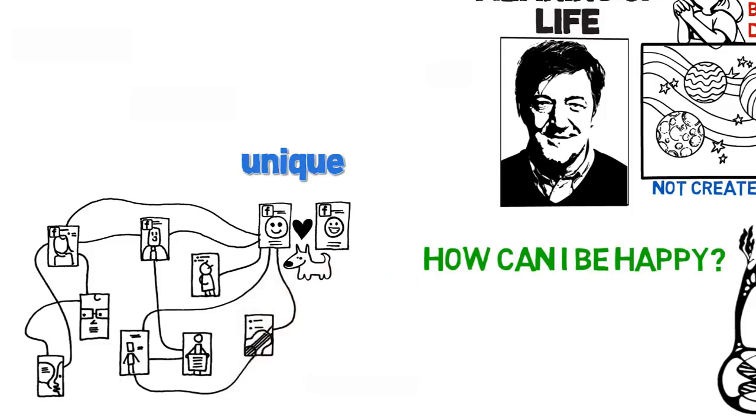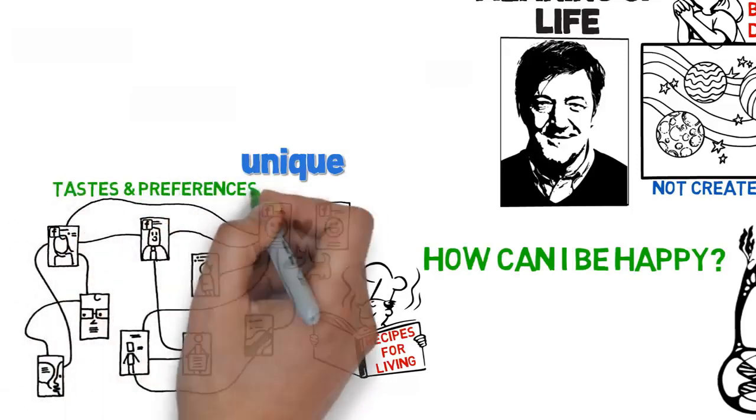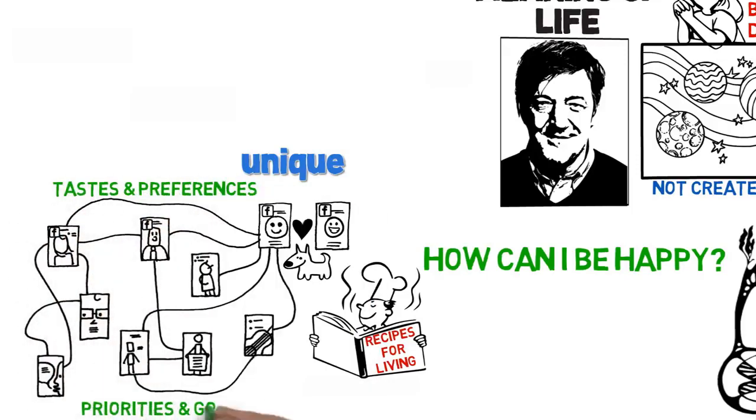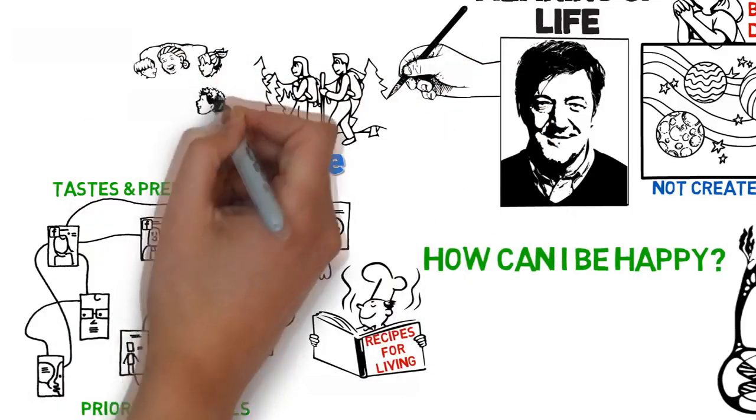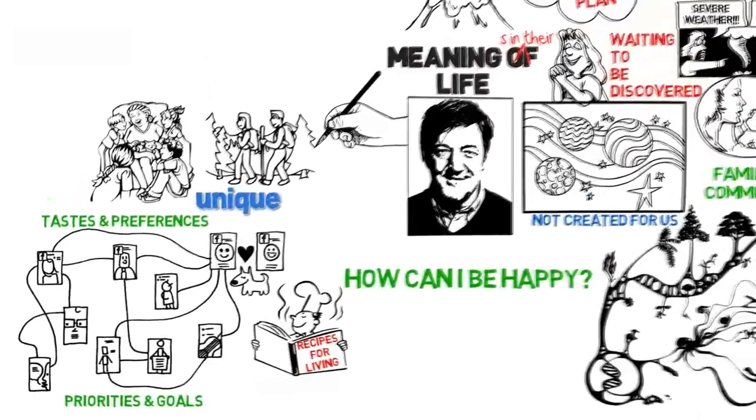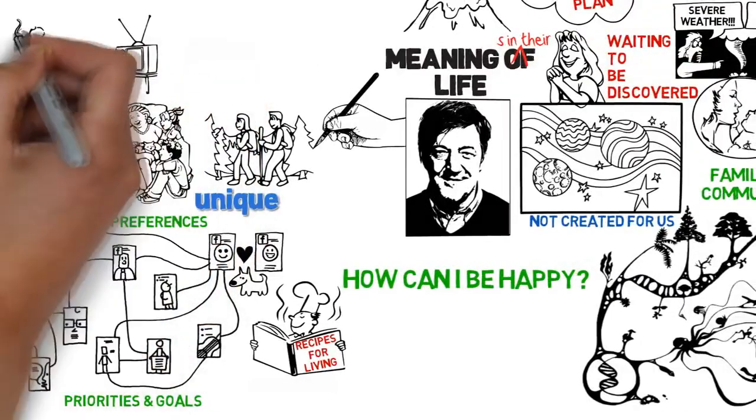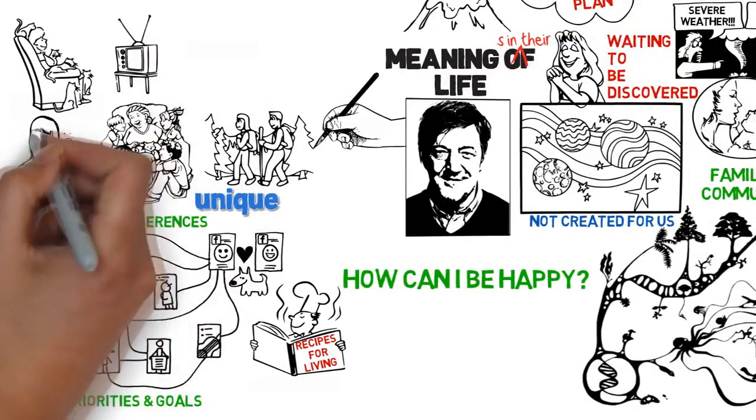There are no simple recipes for living that are applicable to all people. We have different tastes and preferences, different priorities and goals. One person may like drawing, walking in the woods, and caring for their grandchildren. Another may like cooking, watching soap operas, savoring a favorite wine or a new food.